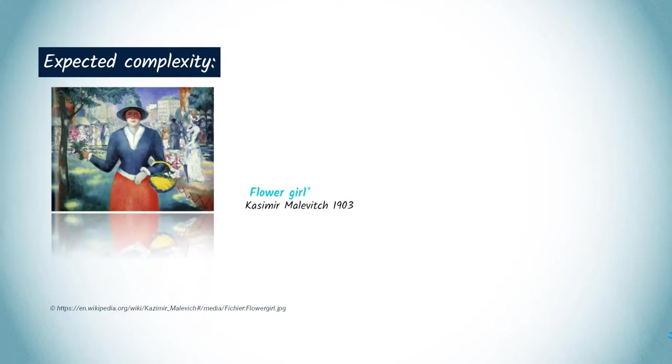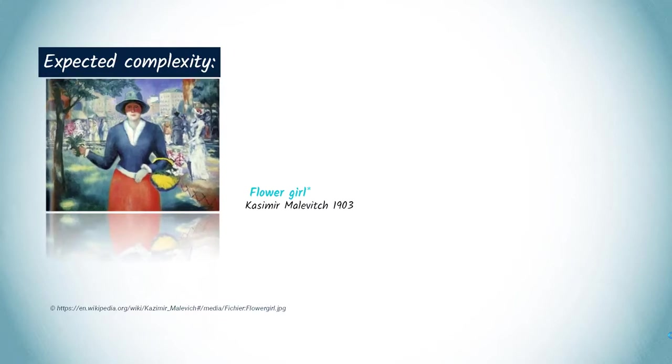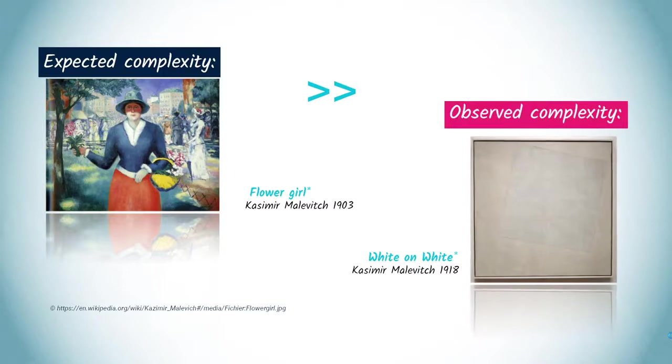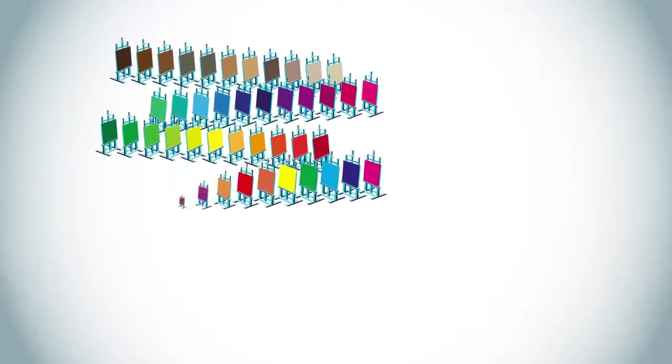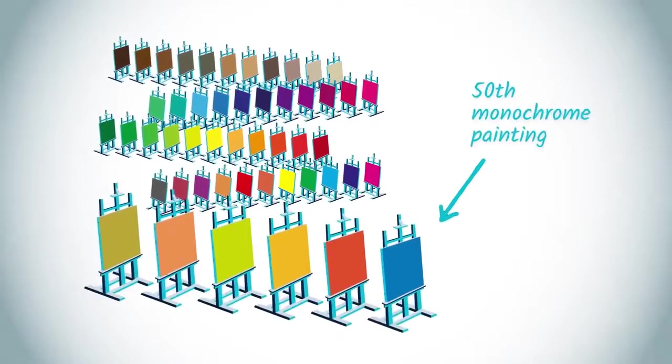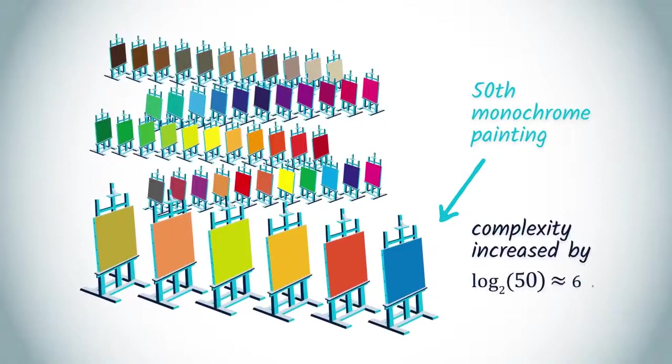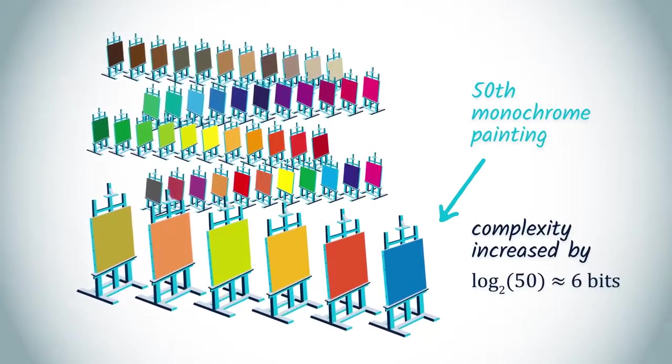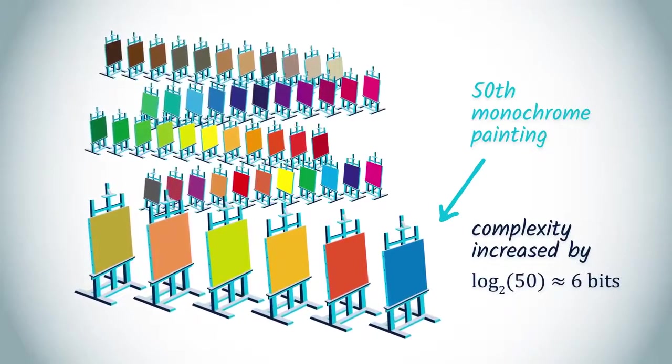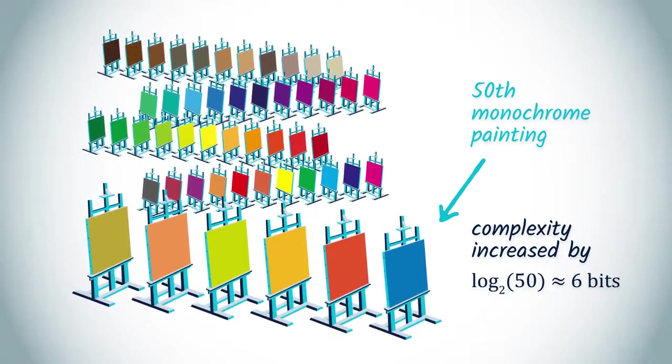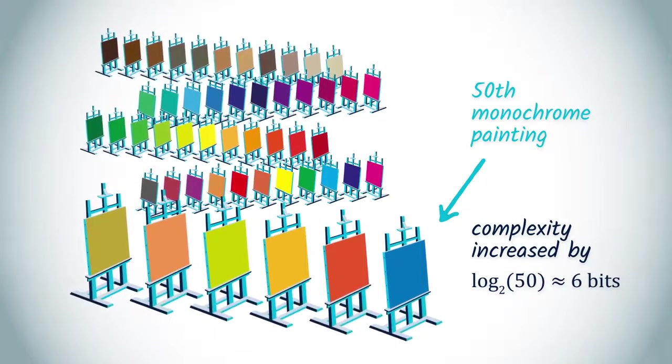From an algorithmic information perspective, one cannot help but see the effect of unexpected simplicity. Of course, the 50th monochrome painting must have been a lot less interesting. In complexity terms, one needs six bits to distinguish it among all previous similar paintings. This additional complexity makes it less unexpectedly simple and therefore less interesting.